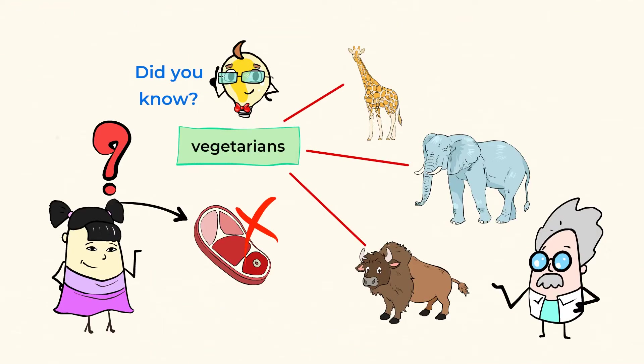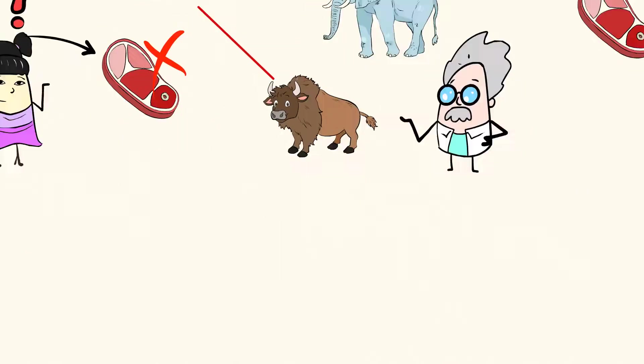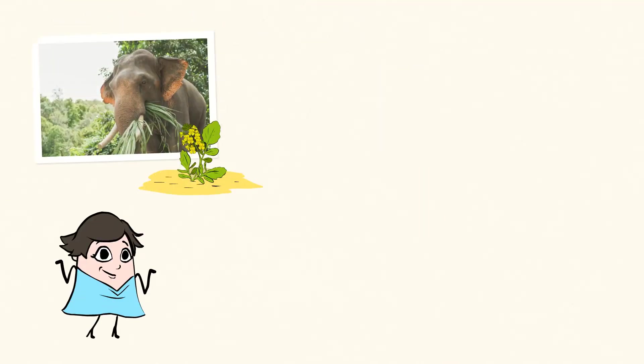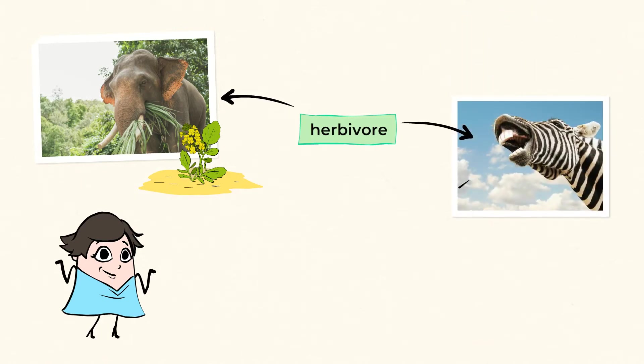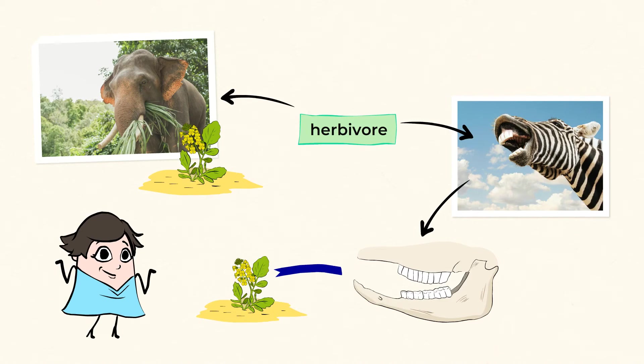And just like some people are vegetarians and choose not to eat meat, there are animals that only eat plants. An herbivore is an animal that only eats plants. There are many animals like that. These creatures usually have flat teeth so that they can grind up the plants that they eat.